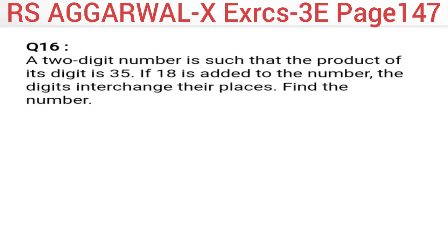Good morning everyone, welcome to my channel Max Classes. In this video we will solve three questions from Exercise 3E from the RS Aggarwal book, Class 10. Our question number 16 from Exercise 3E: a two-digit number is such that the product of its digits is 35. Digits-based questions have been solved in our last two videos in Part 5 and Part 6, so if you have not seen those, first look at Part 5 and Part 6.